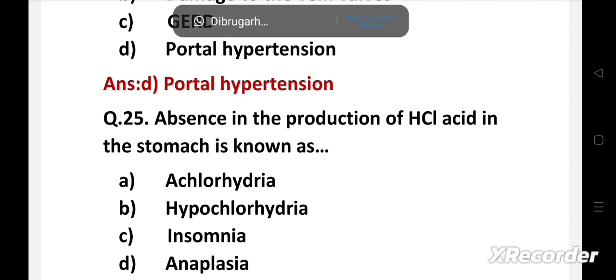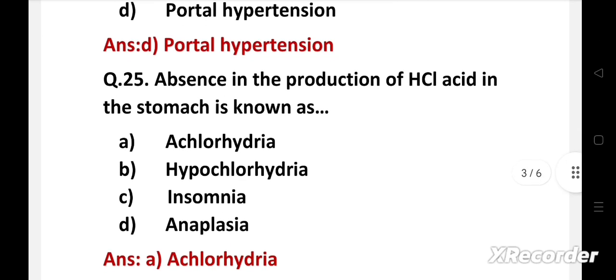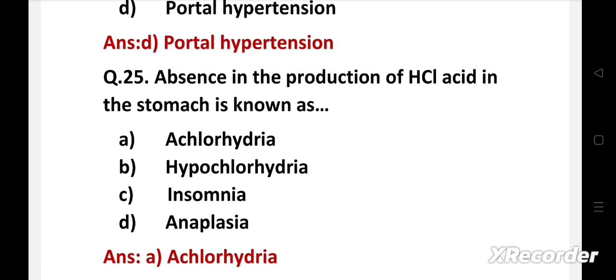The right answer is option A, achlorhydria. Achlorhydria is absence of hydrochloric acid. Hypochlorhydria means decreased amount of acid secretion. Hyperchlorhydria is high level of acid.